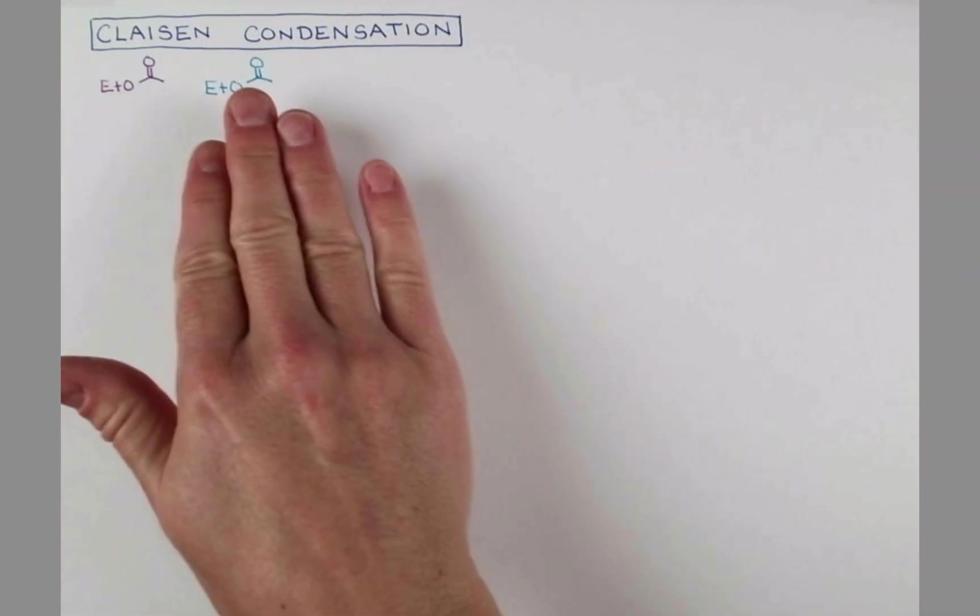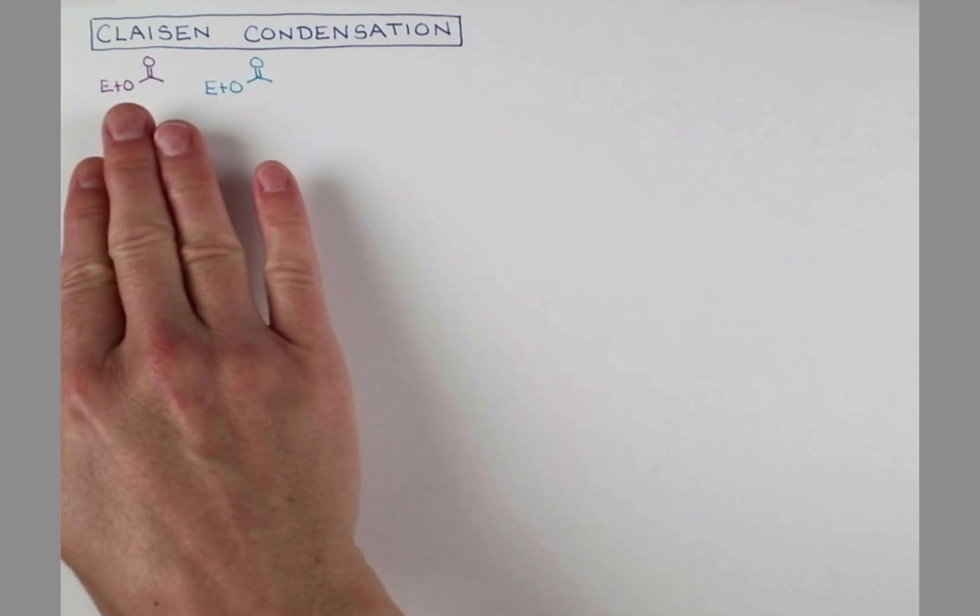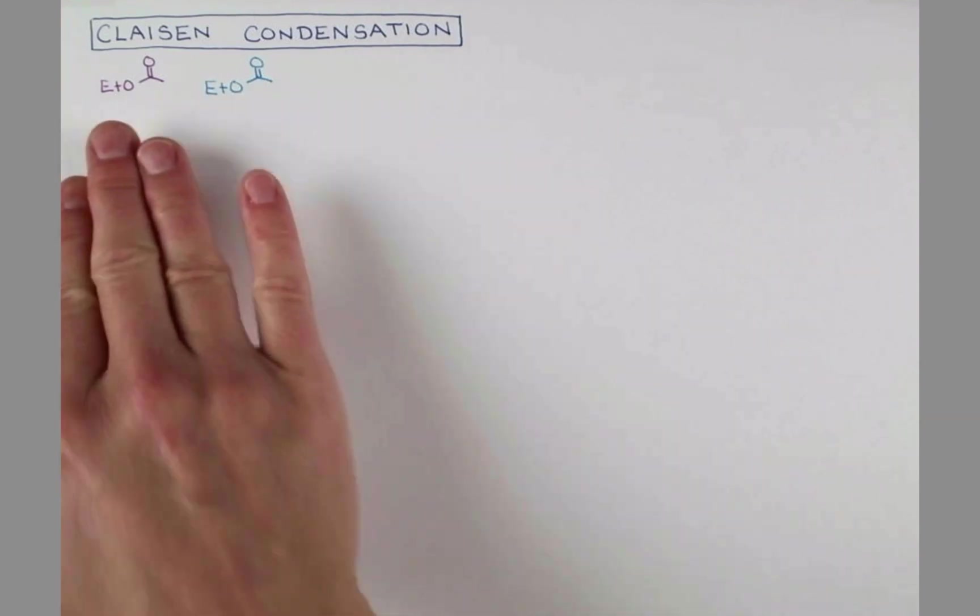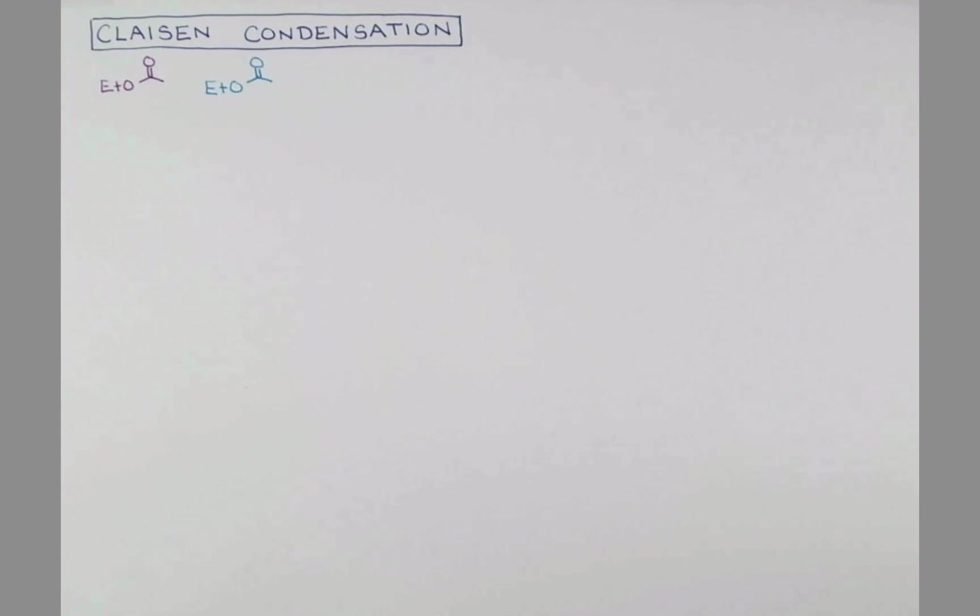In this reaction we'll have two esters reacting, and here I've shown ethyl acetate twice. I've just shown it in two different colors so we can see where the new bonds form.